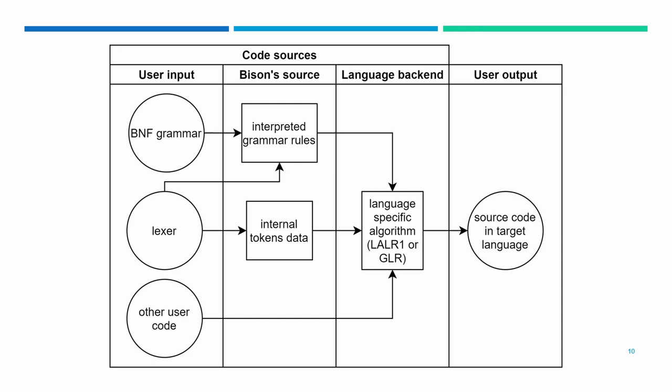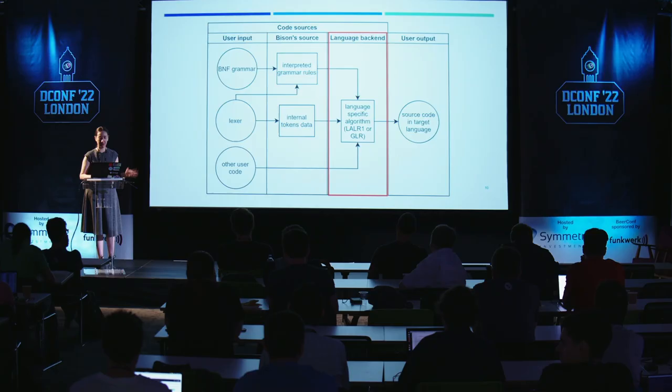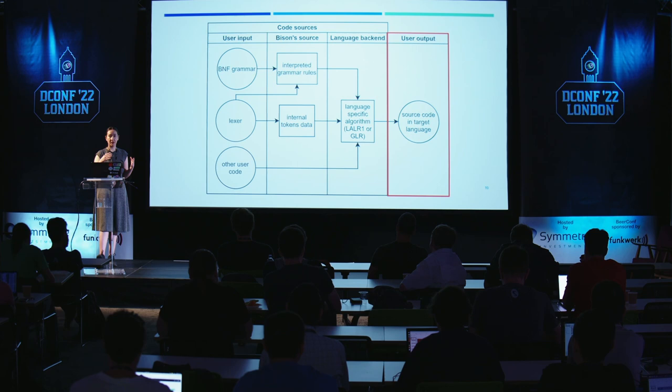Let's look at how Bison creates the output. The code comes from three main sources: the user input — where you specify the grammar, the lexer, and other user code containing business logic — then Bison's source, which interprets grammar rules and transforms lexers with internal token data. All of this is assembled by the language backend, which is language-specific. The D backend is written in D and implements the parsing algorithm. The output is source code in your target language — in this case D — which you can compile and run however you want.